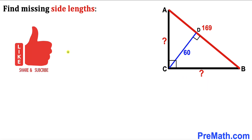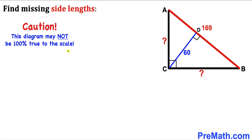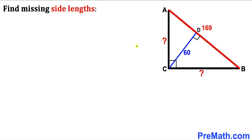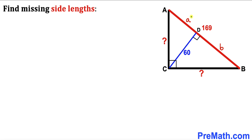Please don't forget to give a thumbs up and subscribe, and please keep in mind that this figure may not be 100% true to scale. Let's go ahead and get started. Here's our very first step: let's label this segment AD as lowercase a, and this other segment BD as lowercase b. Our task is to find the values of a and b before we calculate these side lengths.